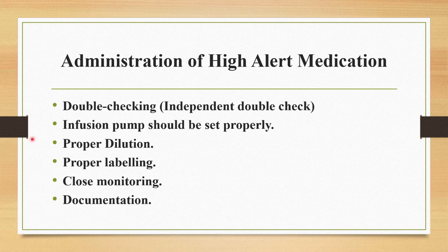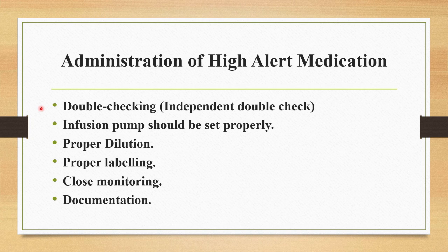Here are some guidelines for administration of high alert medications. The first one is independent double checking. For instance, if you are going to administer injection potassium chloride, before loading the medicine it needs to be cross-checked by your in-charge. Two persons have to independently check the dosage, dilutions, and calculations, and then compare the results in order to prevent error. The second one is that the infusion pump should be set properly. As you dilute the medicine and connect through the infusion pump, it always needs to be set properly and cross-checked by the in-charge.